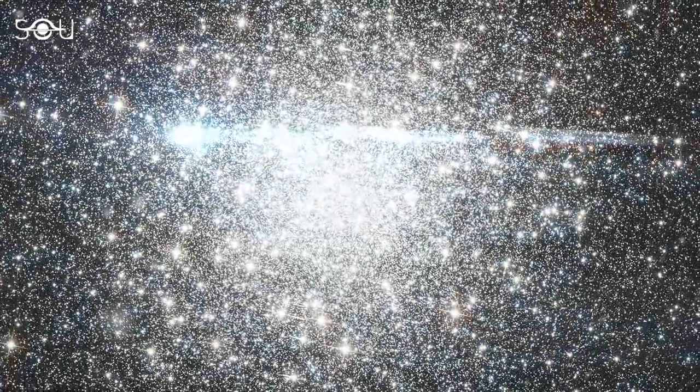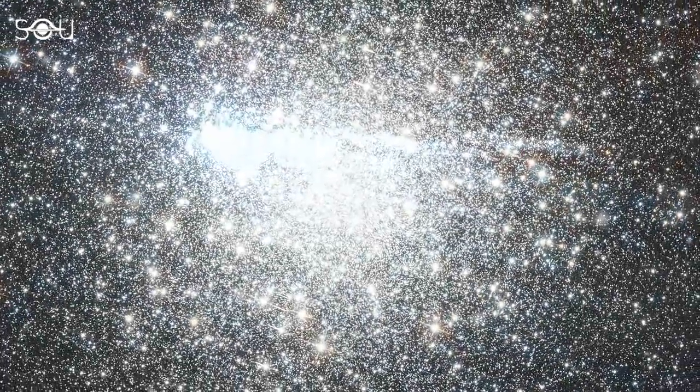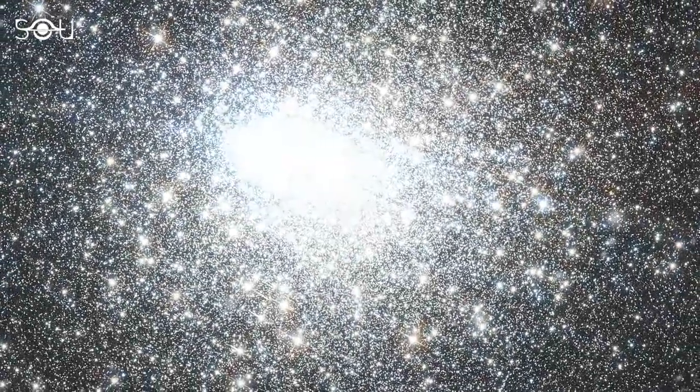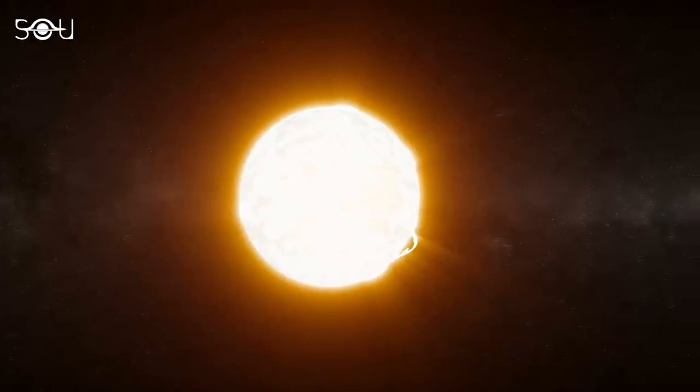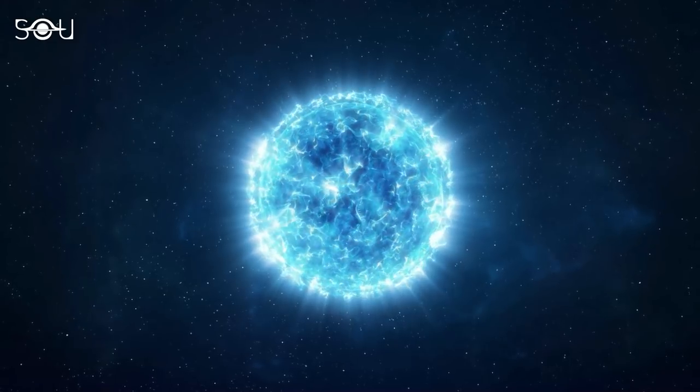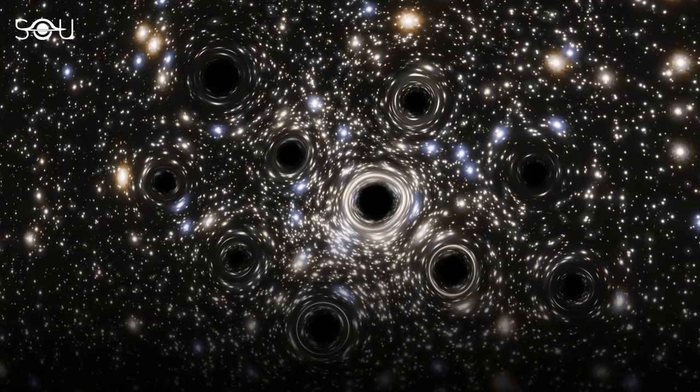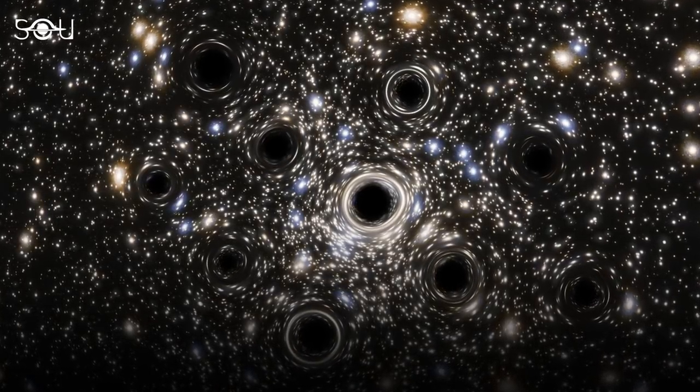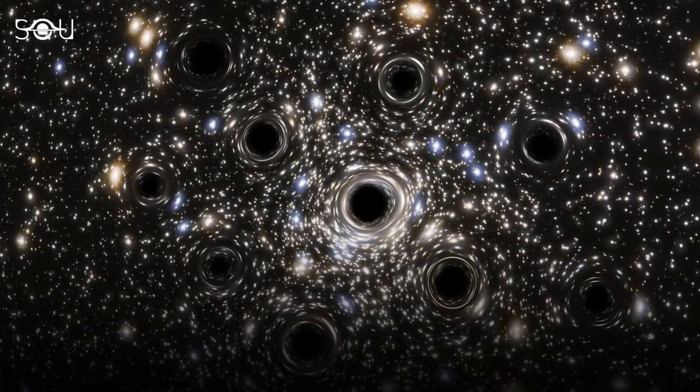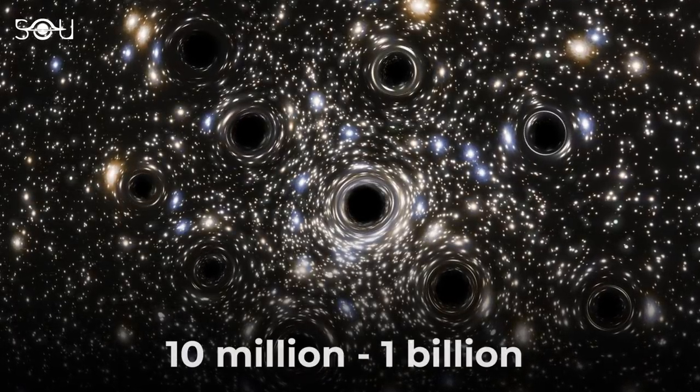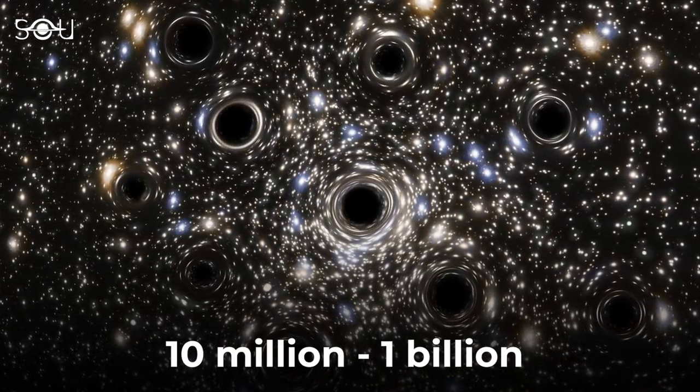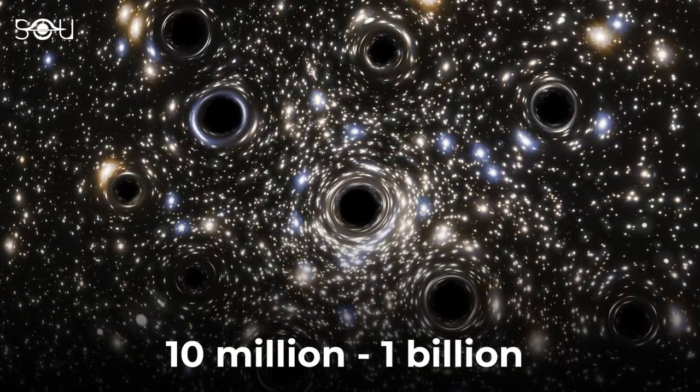According to our best estimates, the Milky Way contains 100 billion to 400 billion stars. These include stars at different stages of evolution. Hence, our galaxy should be littered with black holes. Our stellar evolution models predict that there should be as many as 10 million to 1 billion stellar mass black holes out there.